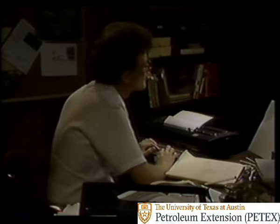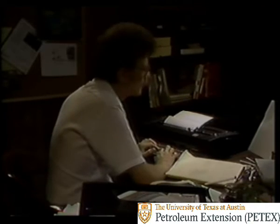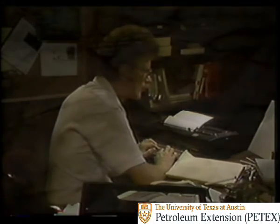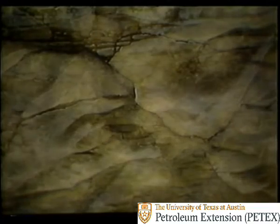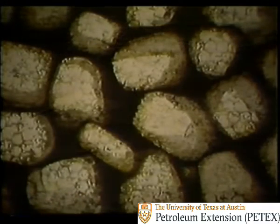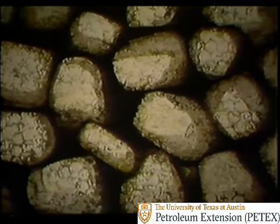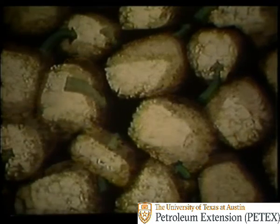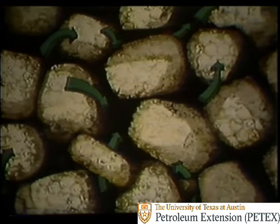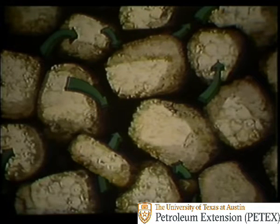How can fluids move through rock layers? Sedimentary rock is actually tightly compacted grains of sand, silt, and clay. Very small pores, or microscopic spaces, remain between the grains. When the pores and the connections between the pores are large enough, fluids — hydrocarbons in this case — can move from one pore to another. The rock, then, is porous and permeable.